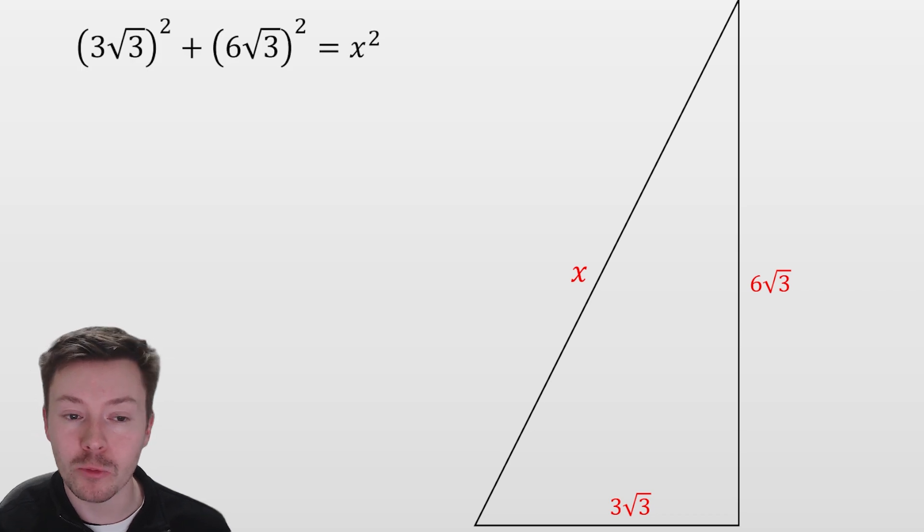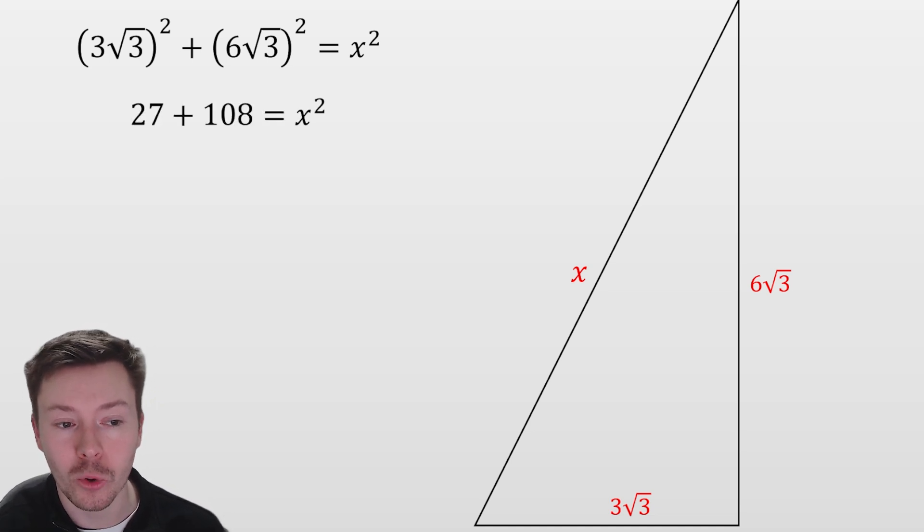From there, I can square both of those using Pythagoras and square root them to get x. However, I don't need to square root because I'm looking for the area of the square, which is x². Squaring them: 27 + 108 gives me 135.